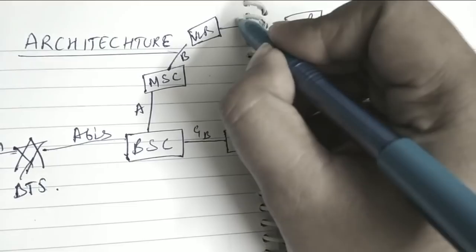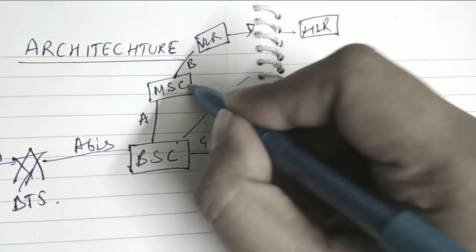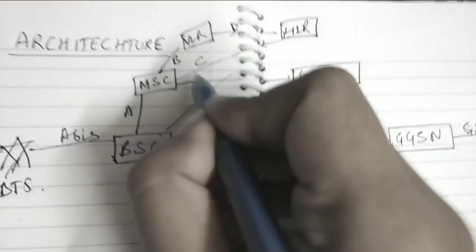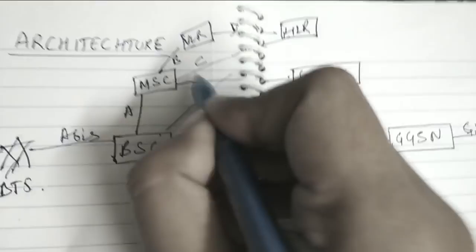MSC is connected to the GMSC also, Gateway Mobile Switching Center, by E Interface. MSC is connected to the EIR also by F Interface.